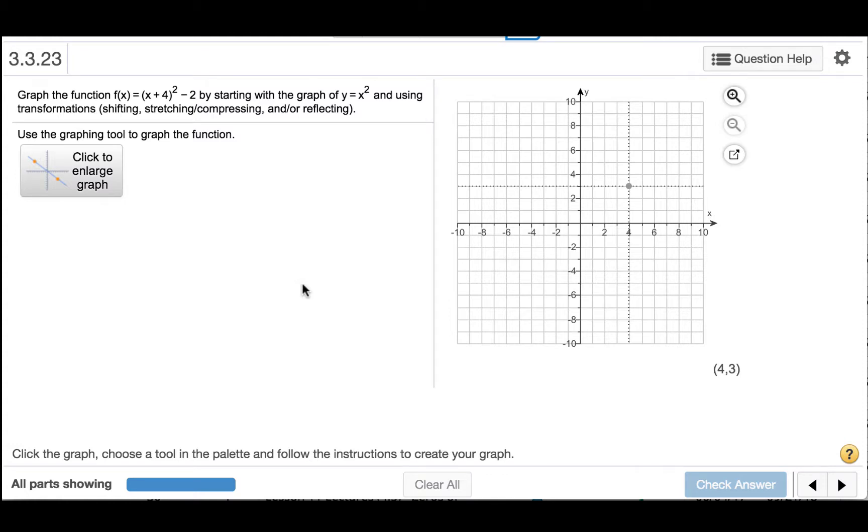Graph the function f(x) = (x + 4)² - 2 by starting with the graph of y = x² and using transformations: shifting, stretching, compressing, and/or reflecting.